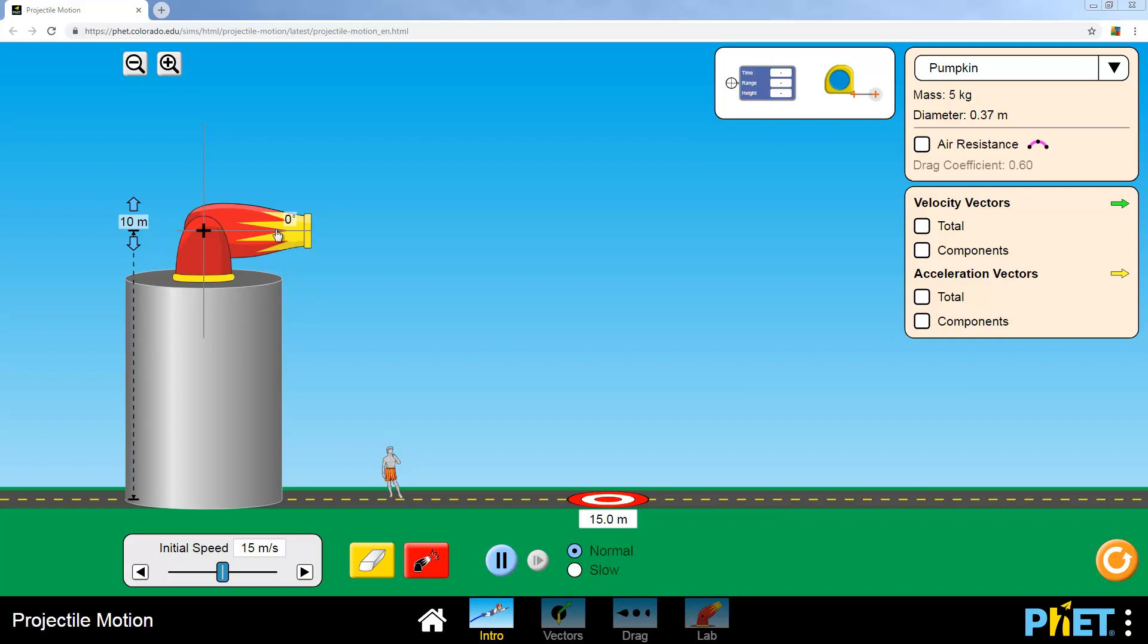So this is how you use the site. This is a cannon that's going to fire a 5 kilogram pumpkin. You can change the angle. We generally want it to be up somewhere, so horizontal is kind of boring. So let's put it up here somewhere, maybe at 30 degrees, something like that.